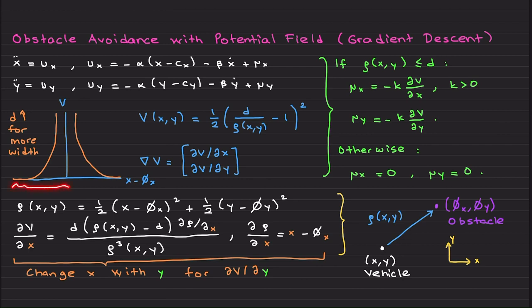Now let me explain why I choose this V. If you take this distance metric and put it inside V and plot, I am just plotting with respect to x minus φx. You can also generate a plot based on y minus φy.